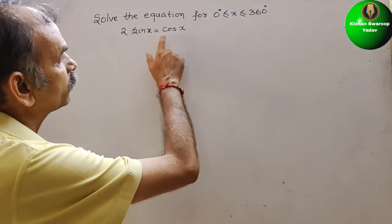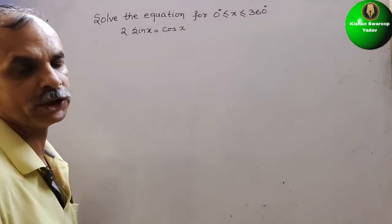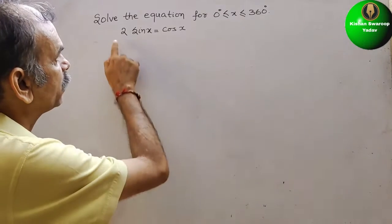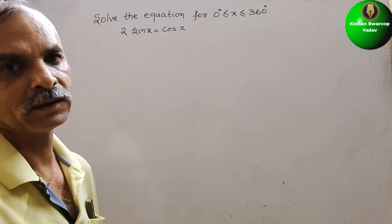Your question is, solve the equation for 0 degree less than or equal to x less than or equal to 360 degrees. What they have given? 2 sin x equals cos x. They have given like this.